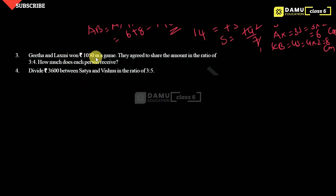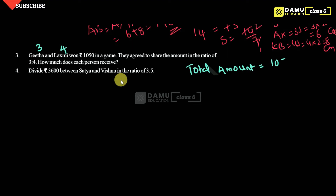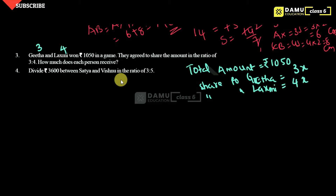Next one. Gita and Lakshmi own 1,050 rupees in a game. They agreed to share the amount in the ratio 3 is to 4. How much does each person receive? Gita will take 3 parts and Lakshmi will take 4 parts from the total. The total amount is 1,050 rupees. Share to Gita will be 3x and share to Lakshmi will be 4x.